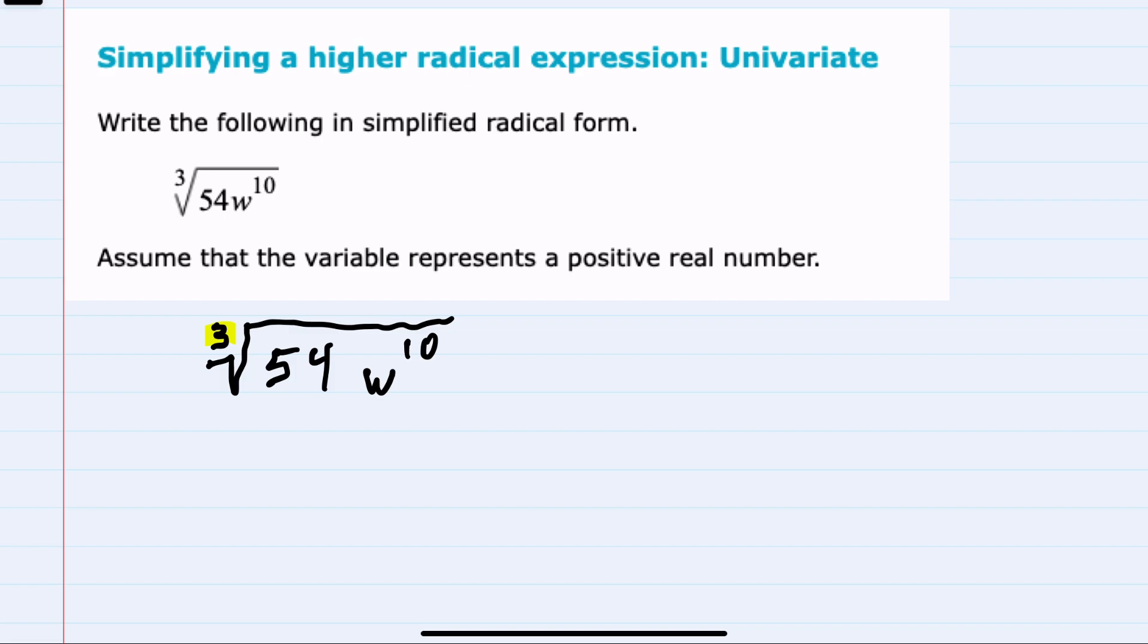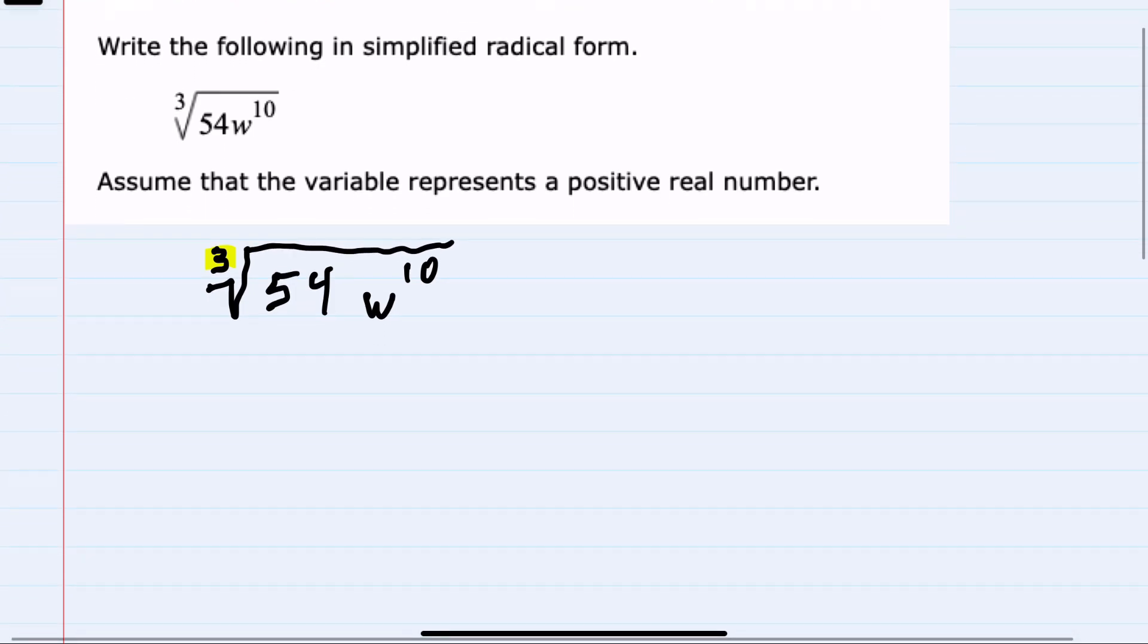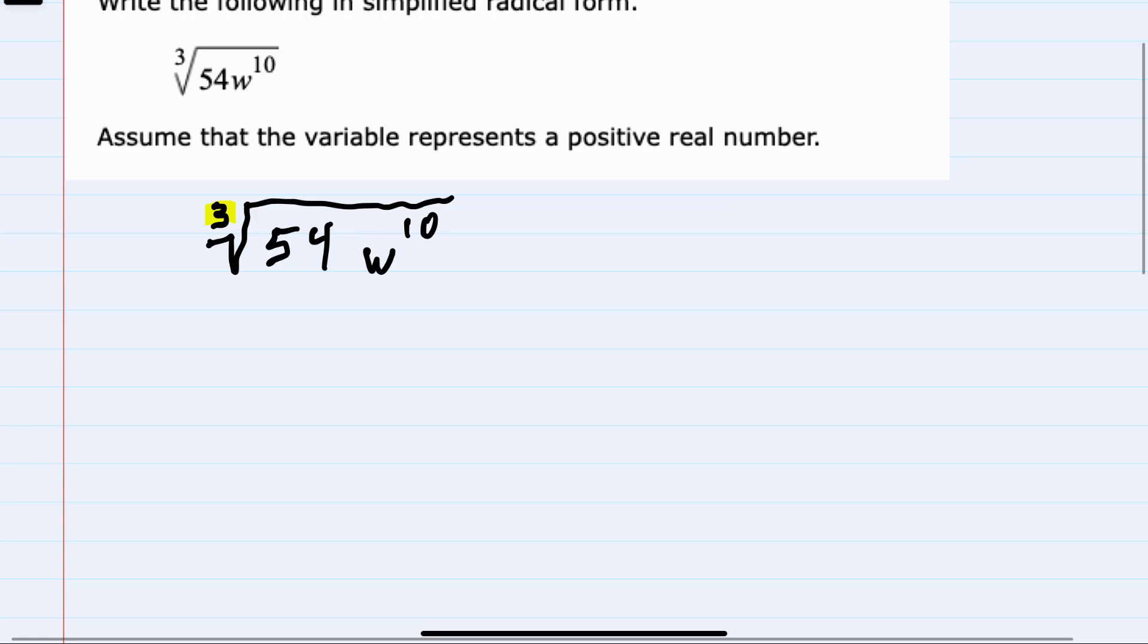To simplify cubed roots, we'll want to rewrite everything underneath this radical with either a power of 3 or at least a multiple of a power of 3. For example,